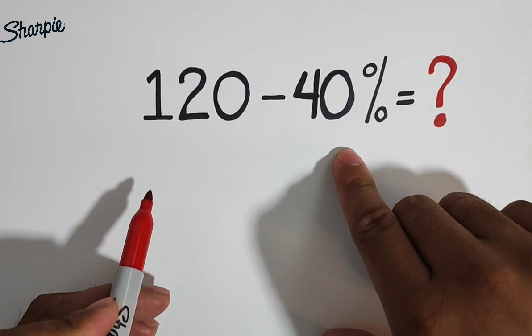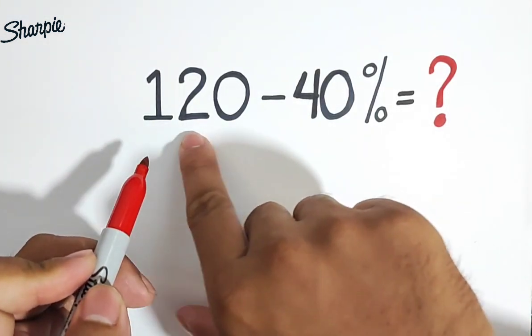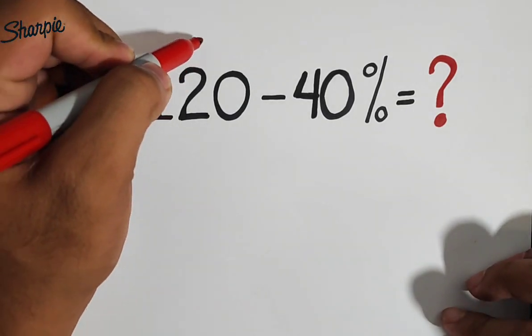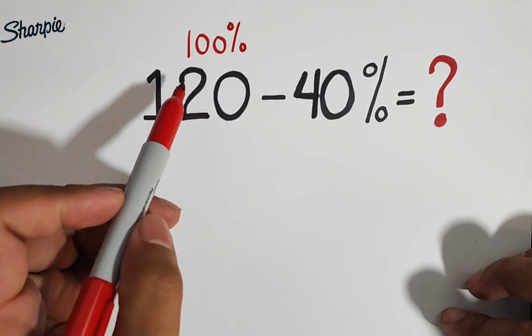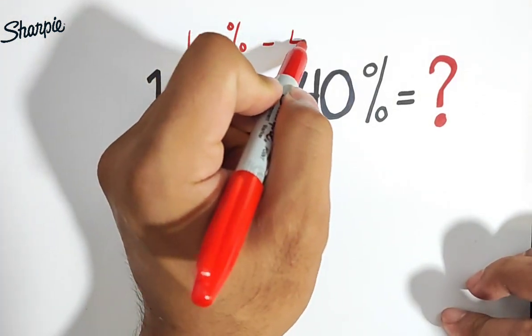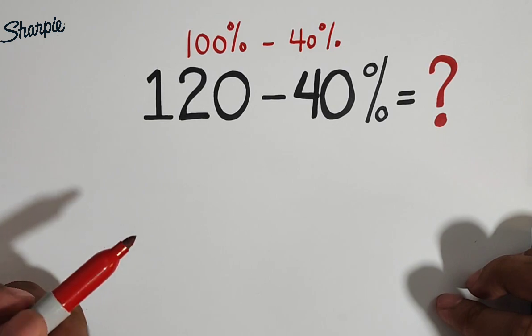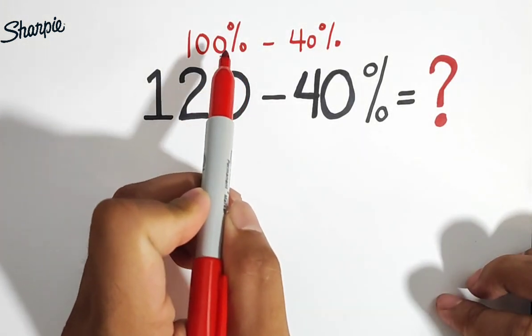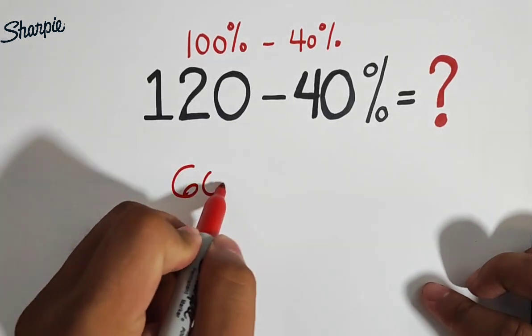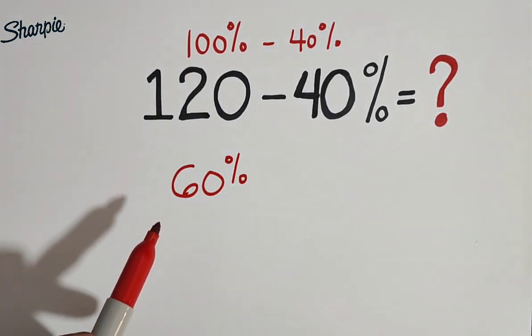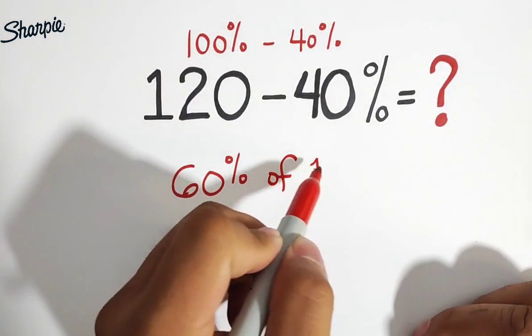120 minus 40%. So this is 40% and we will treat 120 or this given number 120 like 100%. So we have now 100% which is 120 minus your 40%. So what we need to do here is we need to simplify this. 100% minus 40% which is equal to 60%. So here's what we need to do. We need to get the 60% of 120.